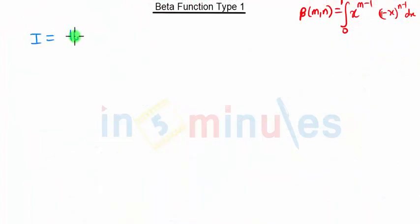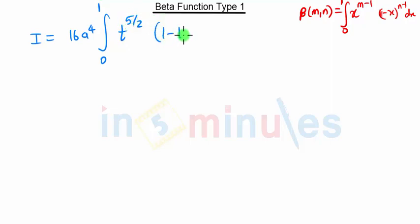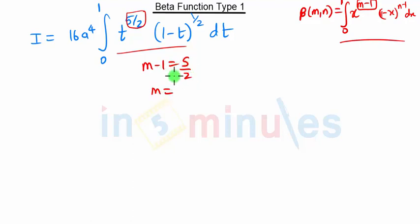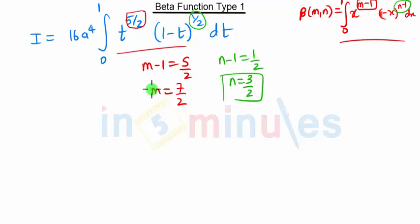So I is 16 a raised to 4, integration of 0 to 1, t raised to 5/2 into 1 minus t the whole raised to half, into dt. If you compare this equation with the Beta function equation, both equations are similar. So what is m minus 1? m minus 1 is 5/2, so m minus 1 is 5/2, then m will be 5/2 plus 1 which is 7/2. And n minus 1 will be half, so n minus 1 is half, so n will be 3/2.